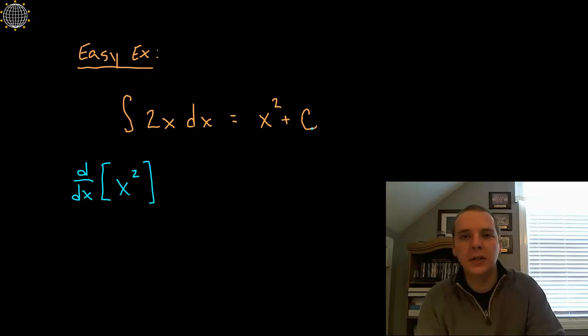So what we could do is differentiate x squared. Really no reason to differentiate the C. The C is going to go to zero anyways, but when you differentiate the x squared we get 2x, which matches your original integrand, so yeah we must have done it correctly.